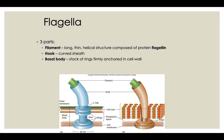A flagella is a bacterial appendage found on the outside of cells used for movement — moving bacteria around in the environment. It can sometimes be used to stick onto things, but it's mostly used for locomotion. The flagella is powered by ATP. The basal body is the part that holds it inside the cell wall and cell membrane, and this is the spinning part.